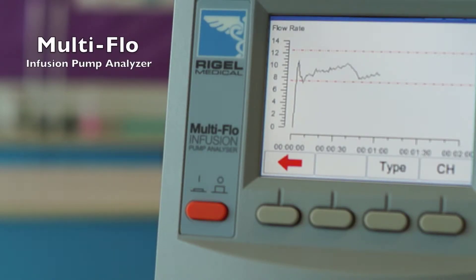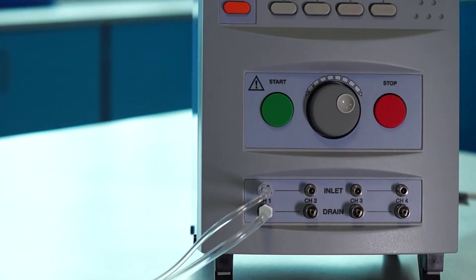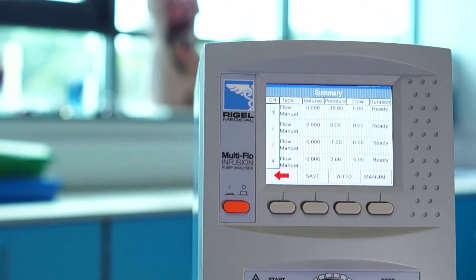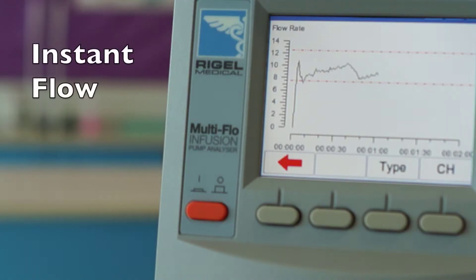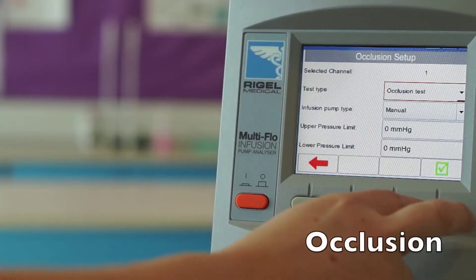The Rigel Multiflow is a single or multi-channel infusion pump analyzer. It provides accurate instant flow measurements from 10 microliters per hour up to 1500 microliters per hour, occlusion pressure measurements, and PCA bolus measurements.